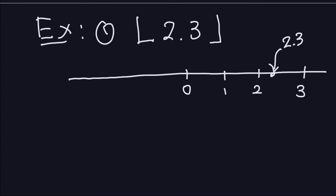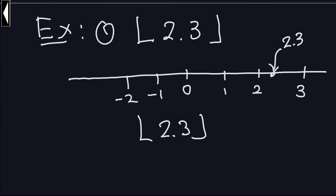Now, to compute the floor function of 2.3, you look at the number and look at all the integers that are less than that number: 2, 1, 0, negative 1, negative 2, and so on to minus infinity. From those integers, you choose the one that is closest to the number on the left — that's the largest integer less than or equal to it. So the floor of 2.3 is 2. Some of you might think the floor function is just the integer part of the number — that's not true actually.